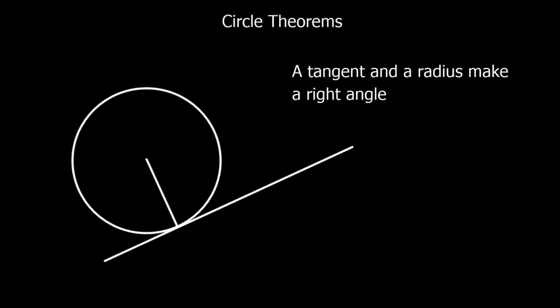Where a tangent meets the circle — where it meets the radius specifically — the radius comes down from the circle and then we've got the tangent here. What it makes is a 90 degree angle, it makes a right angle. So a tangent and a radius make a right angle. Where you've got a tangent and a radius, you've got a right angle.